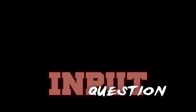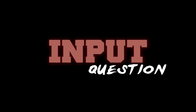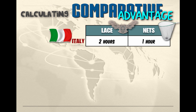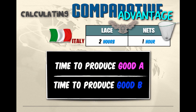There are also input questions in trade analysis. When answering an input question, think of production this way: in the time it took to produce one unit of good A, how much could I have produced of good B? You'll recognize an input question because they use hours of labor to produce a single unit of a good. When analyzing comparative advantage in an input question, use the equation: time to produce good A divided by the time to produce good B.